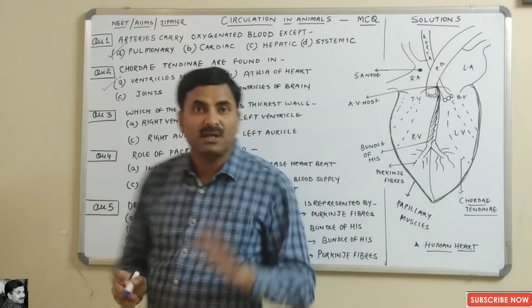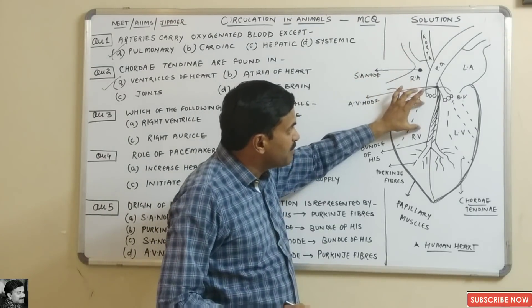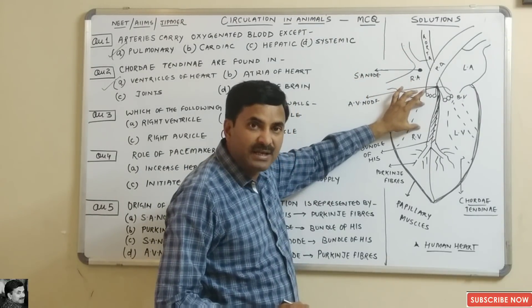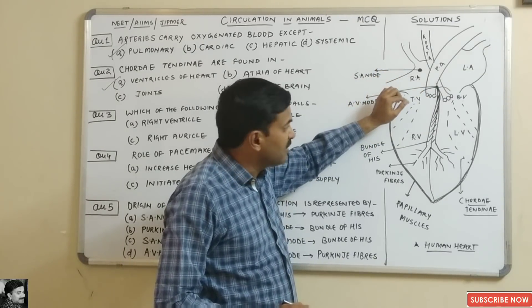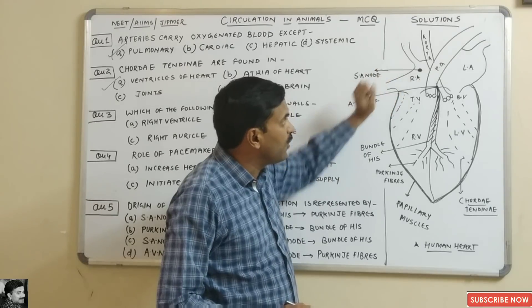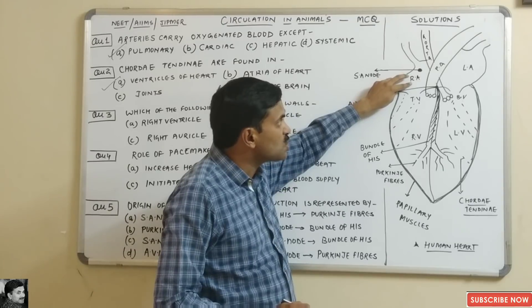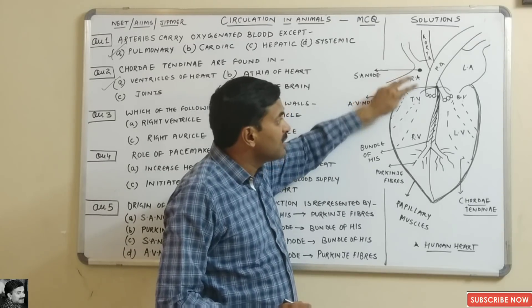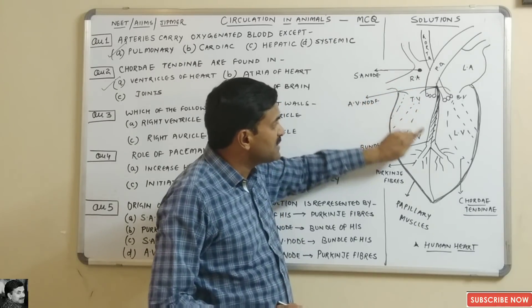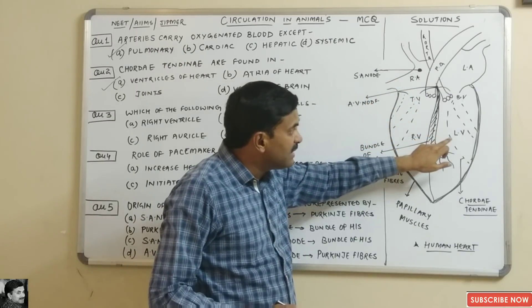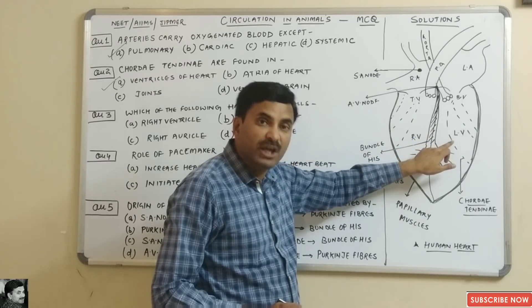Question three: which of the following has the thickest walls? The upper two chambers are the auricles and the lower two are the ventricles. Always remember that the wall of the ventricle is thicker than the wall of the auricle, because auricles store blood while ventricles pump it.